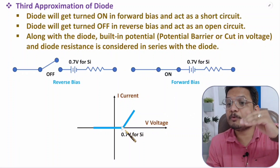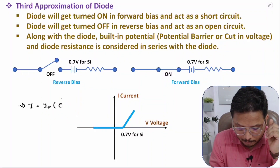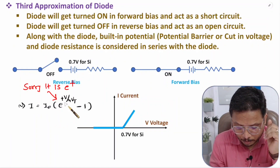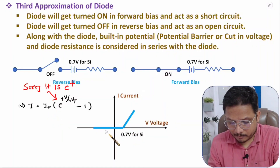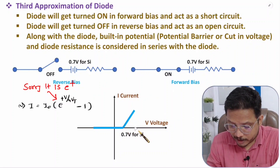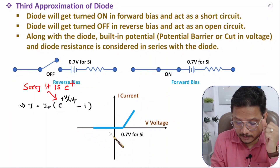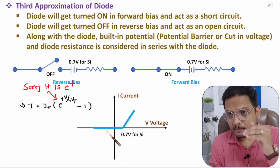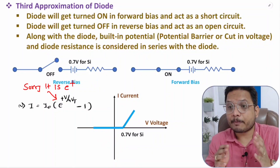Practically that linear increase is not what happens — I have explained that in the forward and reverse bias video. Practically, current increases exponentially. The current equation is: I = I₀ × (e^(V / η·Vt) − 1), where I₀ is the current due to minority carriers. But in this approximation we consider linear resistance, so in forward bias as you increase voltage, current increases linearly.